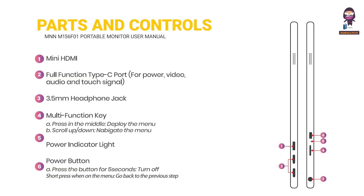Identifying parts and controls: Mini HDMI port, full function Type-C port for power, video, audio, and touch signals, 3.5mm headphone jack, and multi-function key. Press in the middle to deploy the menu, scroll up or down to navigate the menu. Power indicator light and power button — press the button for seconds to turn on.